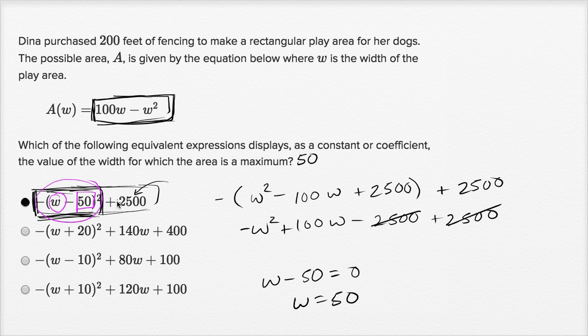This form of a quadratic is called vertex form. It makes it very easy to find the vertex, which is going to be the minimum or the maximum value of a function.